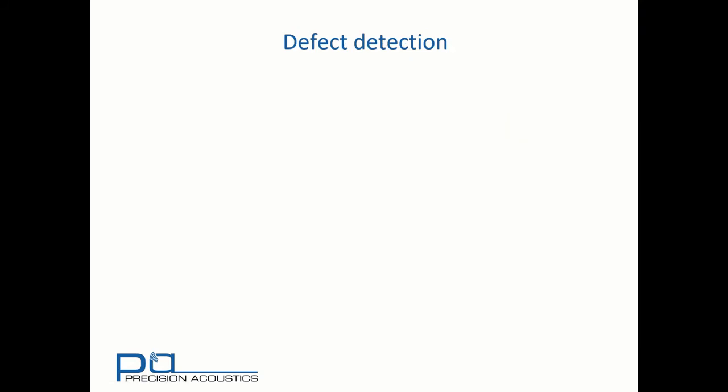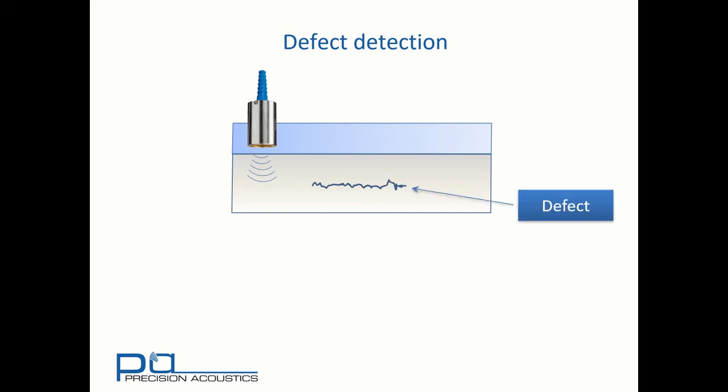We can use exactly the same principles to start to determine objects embedded within an item. This is very typically done within defect detection in non-destructive testing. So consider again a sample with some water above it, and a transducer. This time we will introduce a defect in the middle of the sample. In the initial location of the transducer, we can see the front and rear surface reflections. But if we translate the transducer over the defect, we gain an additional reflection in the middle. As previously, we can use time delays to determine where within the sample relative to the front and rear surface reflections, that defect can be located.